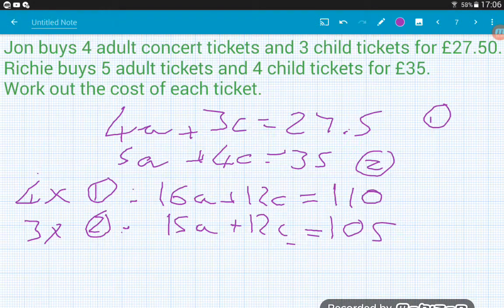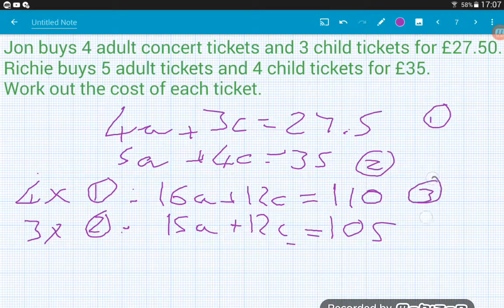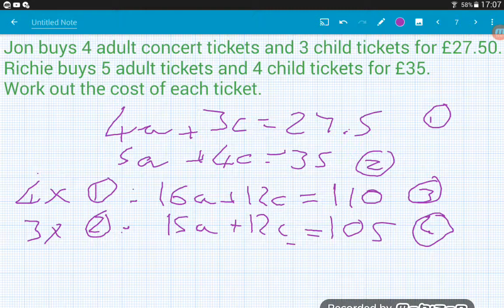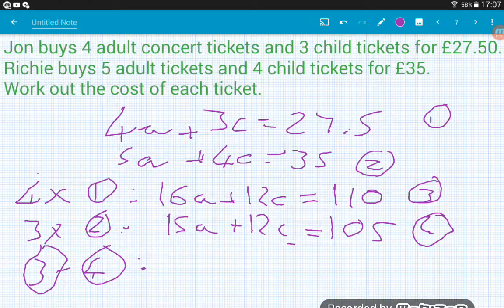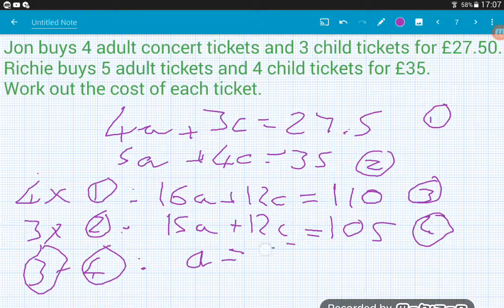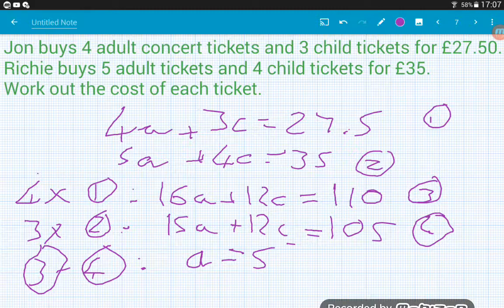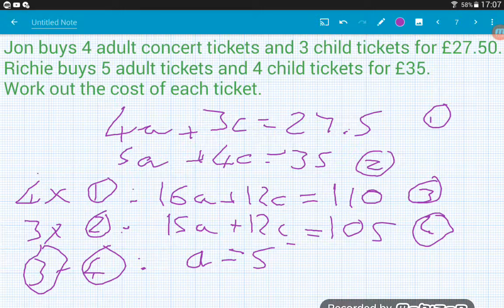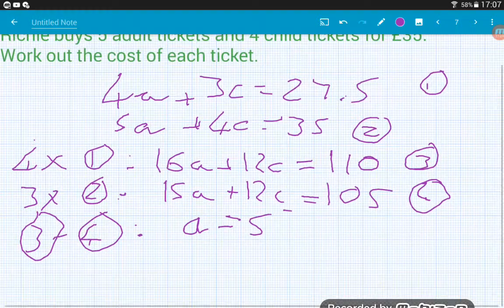So now we've got the same amount of child tickets, so we can eliminate those. And we're going to want to do, I'm going to want to label my equations first, three and four. And we're going to want to do equation three take away equation four to keep things positive. So 16A take 15A would leave us with 1A, and 110 take away 105 will leave us with five. So an adult ticket costs five pounds. In your answer, don't forget about the pound sign.